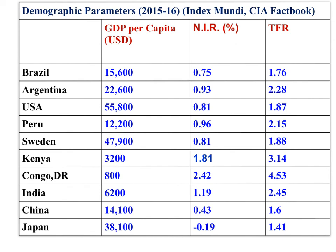Again, you can see the relationship between per capita GDP — close cousin of annual income — and natural increase rate and total fertility rate. When populations are less economically developed, as with DRC and Kenya, natural increase rates and total fertility rates are high. These countries are in the transitional stage. However, when GDP per person is high and economies are well developed, with individuals having high standards of living, natural increase rates and total fertility rates are low.